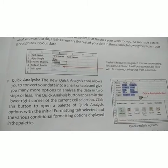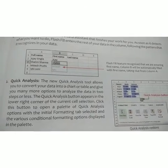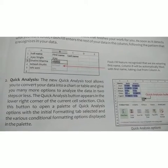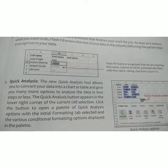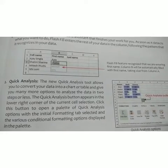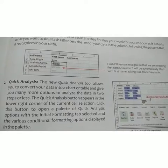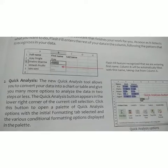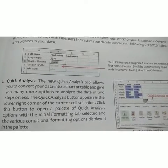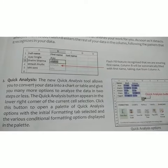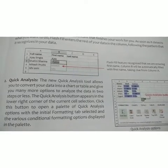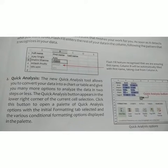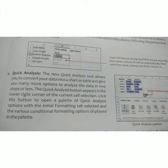The second feature is Quick Analysis. The new Quick Analysis tool allows you to convert your data into a chart or a table and gives you many more options to analyze data in two steps or less. The Quick Analysis button appears in the lower right corner of the current cell selection. Click this button to open a panel of quick analysis options, including conditional formatting options.